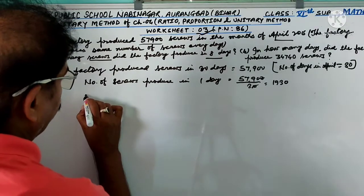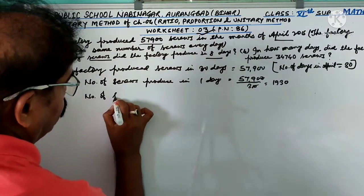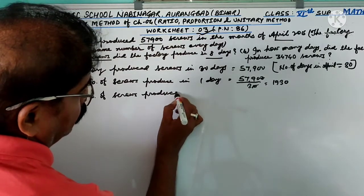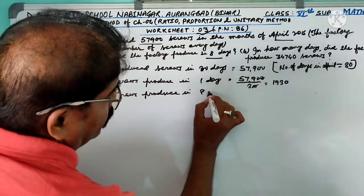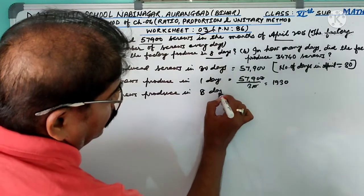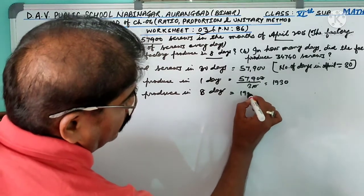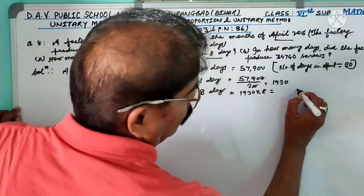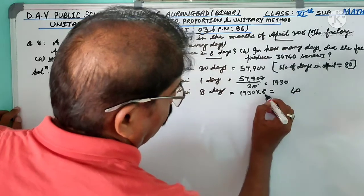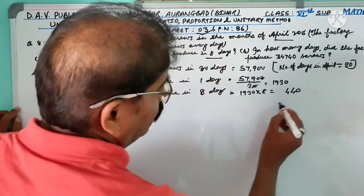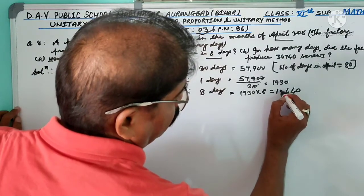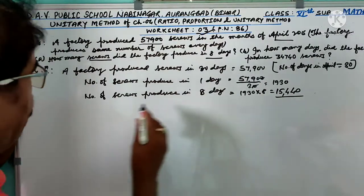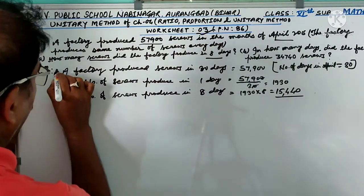Number of screws produced in 8 days equal to 1,930 into 8, equal to: 8 times 0 is 0, 8 times 3 is 24, 8 times 9 is 72 plus 2 is 74, 8 times 1 is 8 plus 7 is 15. That is 15,440 screws produced in 8 days. This is solution of A.